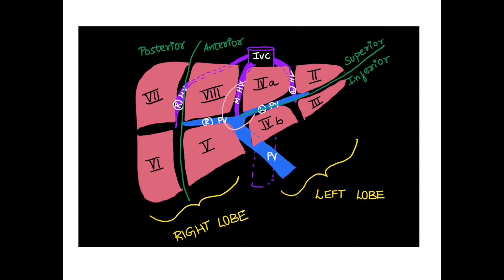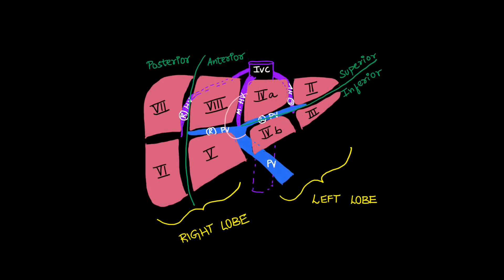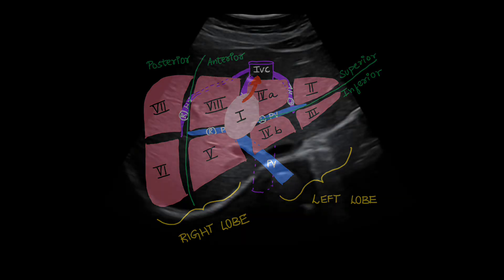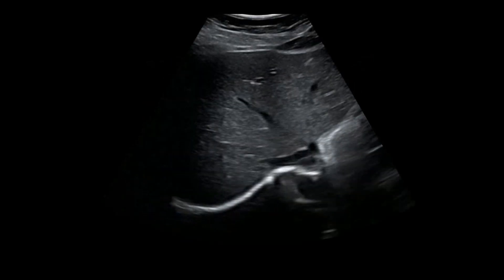The only segment not yet covered is the caudate lobe, also labeled as segment 1. The caudate lobe lies along the inferior surface of the liver, almost along the middle hepatic vein. It drains directly into the IVC and is not drained by any of the three hepatic veins.